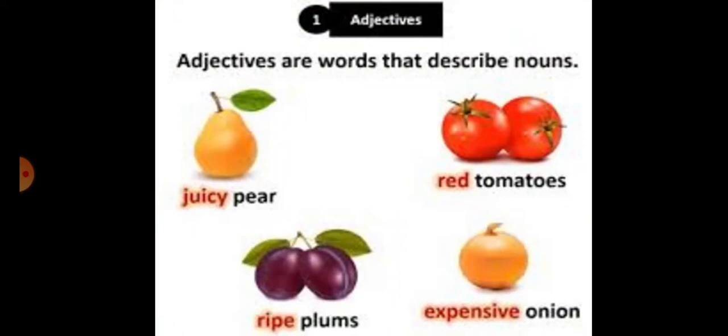Adjectives are basically the words that describe different nouns and pronouns. The examples are in front of you: pear is a noun, tomatoes, plums and onion - these are four nouns. And the words written in red color, they are describing them. Juicy pear - so juicy is its quality, right? So hum kahenge yeh word noun ko describe kar raha hai, isliye yeh adjective kehlayega.